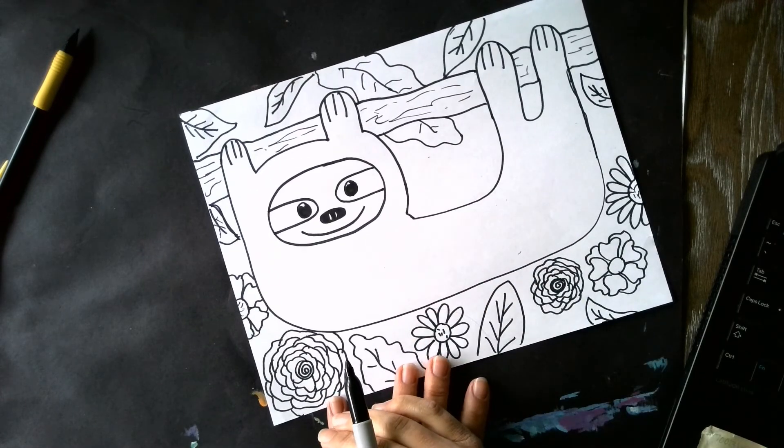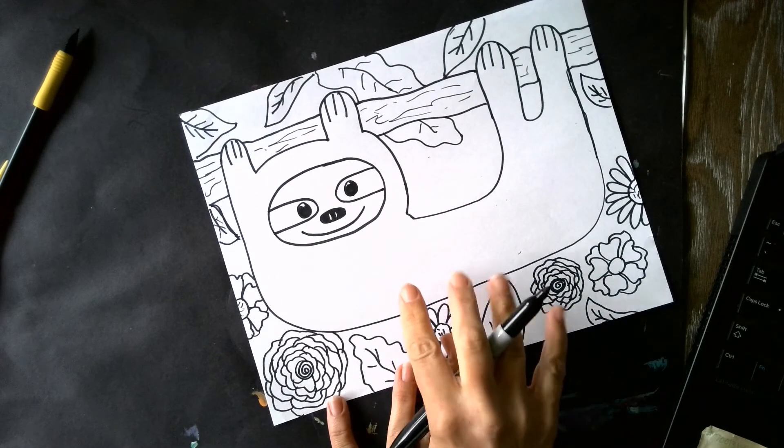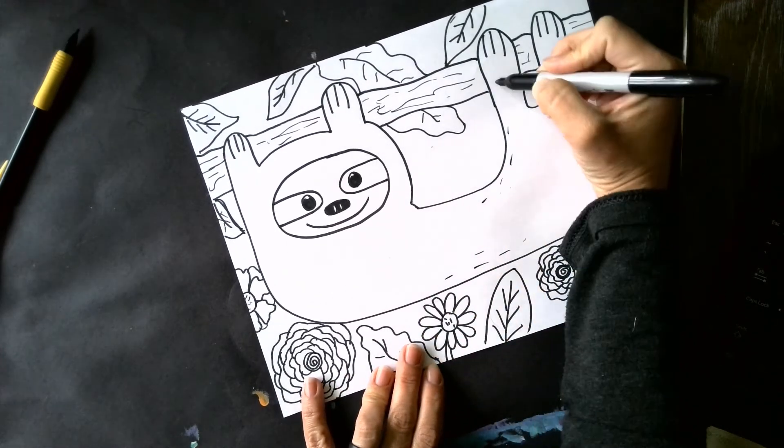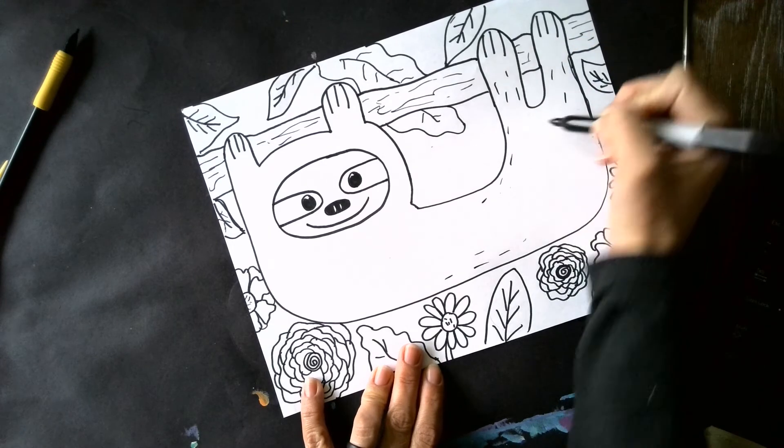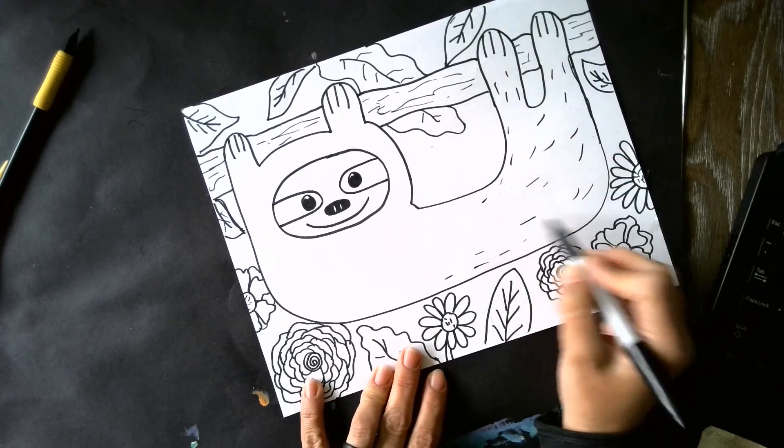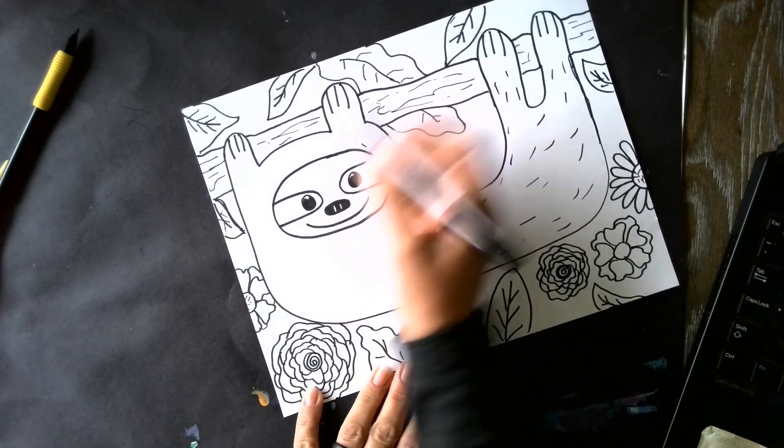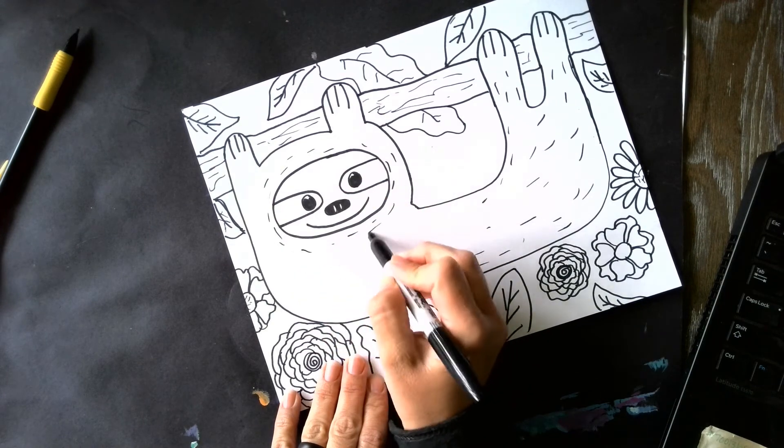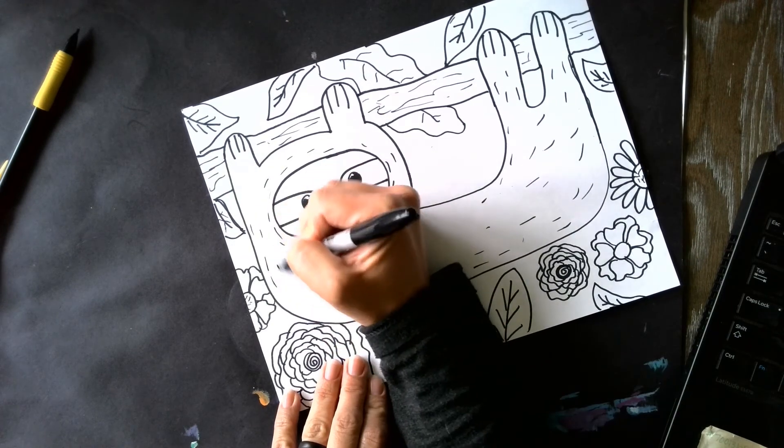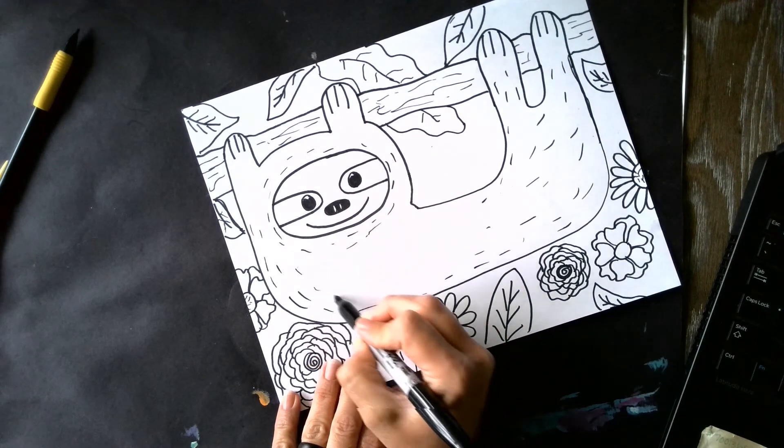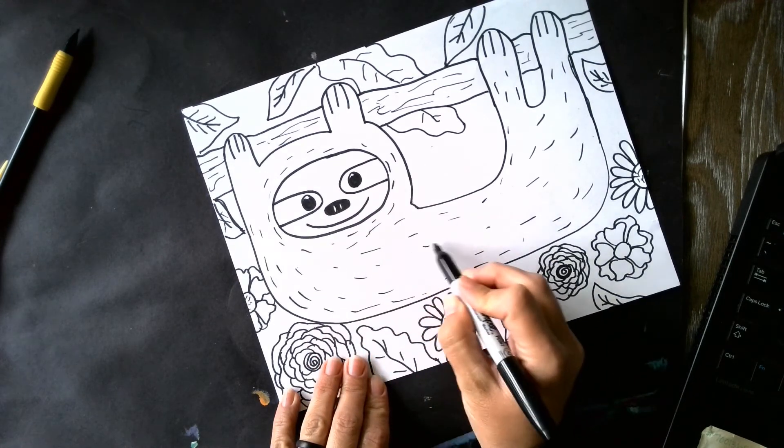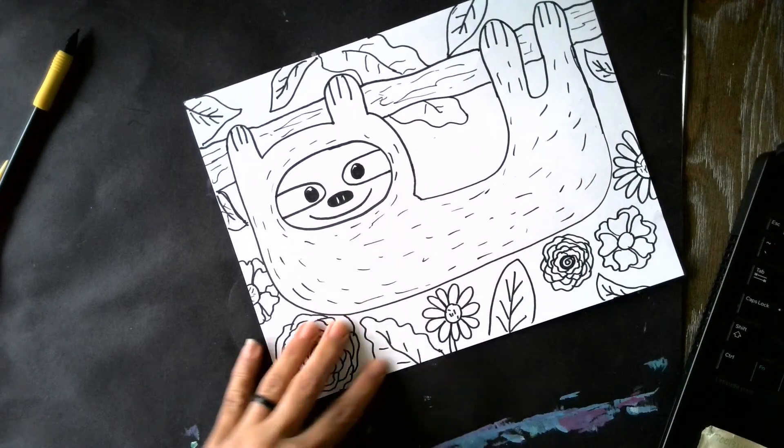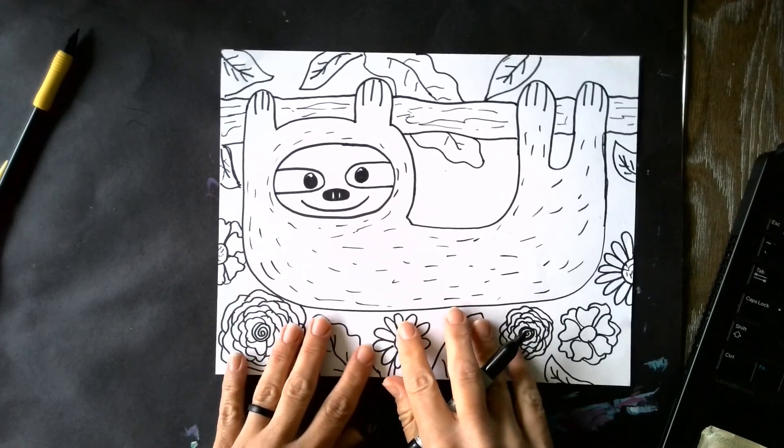And one thing that I forgot to do on my sloth is I want to create texture because sloths have lots and lots of fur. So notice, I'm just kind of changing the direction of my little line. I'm going to kind of make it go around his face and then kind of follow the length of his body along his tummy and then up his legs. So there is our sloth.